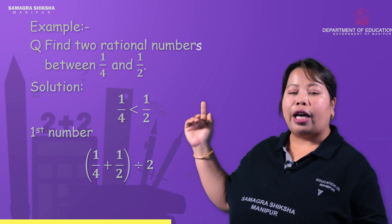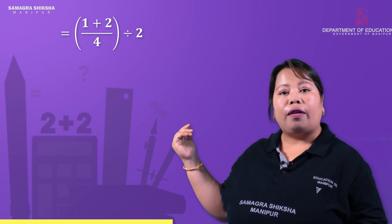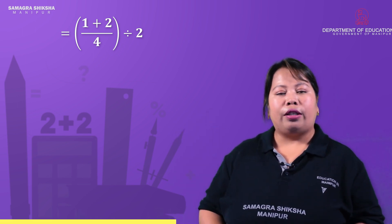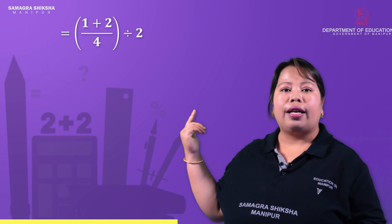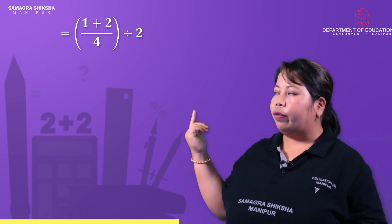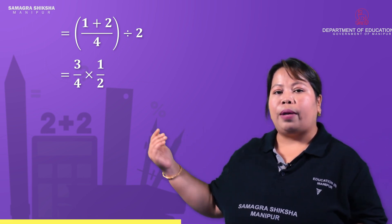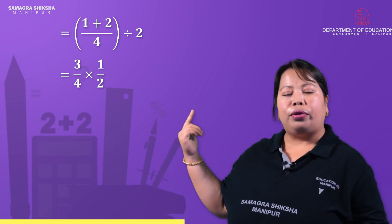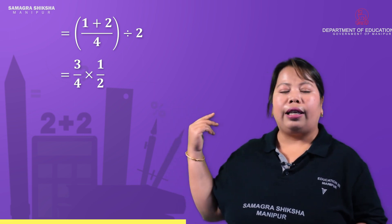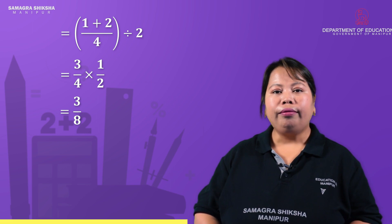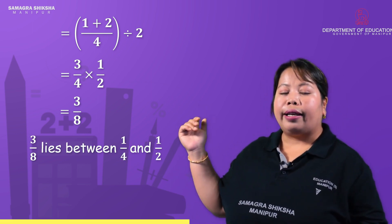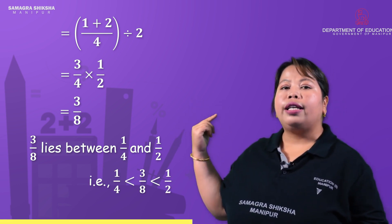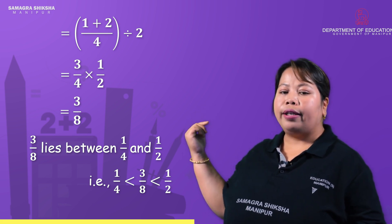The LCM of the denominators is 8. We multiply to get equivalent fractions, then apply the formula. We get 1/4 plus 1/2 divided by 2. Using LCM 8, the numerator is 2 plus 4, divided by 2, which gives us 3/8. So 3/8 lies between 1/4 and 1/2; that is, 1/4 is less than 3/8, which is less than 1/2.